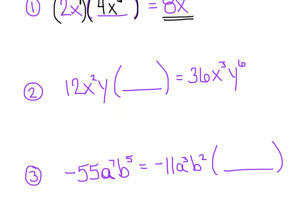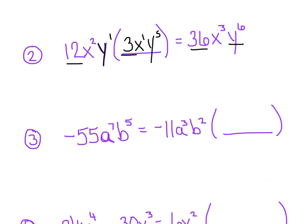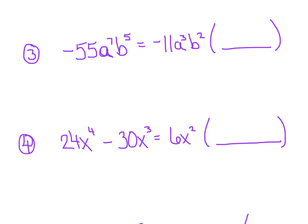Let's try another one. 12 times something equals 36 — I'll put a 3 there. Then x squared times x to the 1st makes x cubed. And y to the 1st times y to the 5th makes y to the 6th — I'm just thinking about what powers add together to make 6. For example 3: if I start with negative 11 and multiply by positive 5, I get negative 55. Starting with a to the 3rd times a to the 4th gives a to the 7th, and b to the 2nd times b to the 3rd gives b to the 5th.